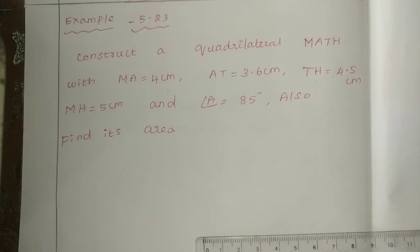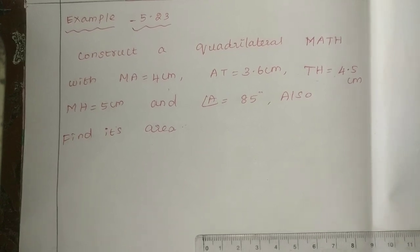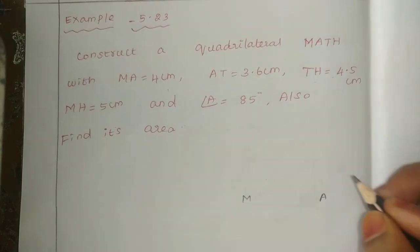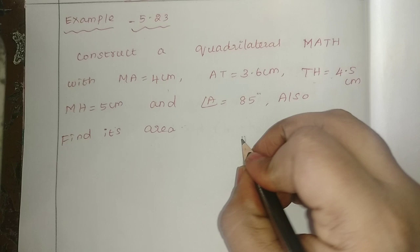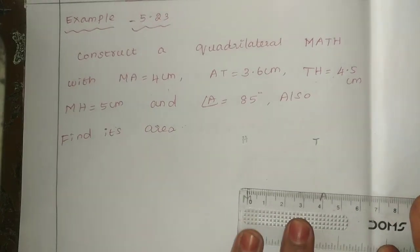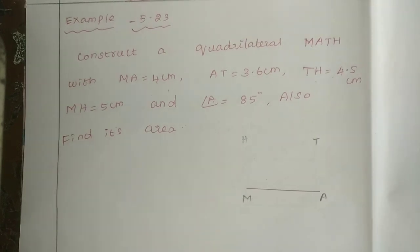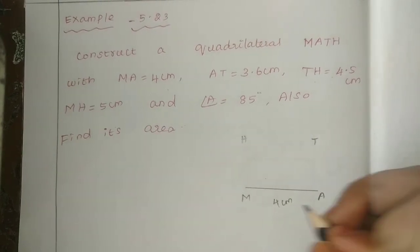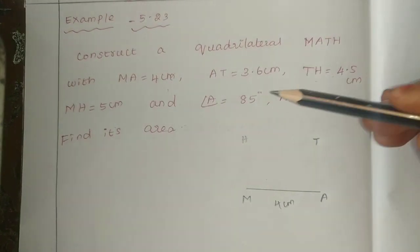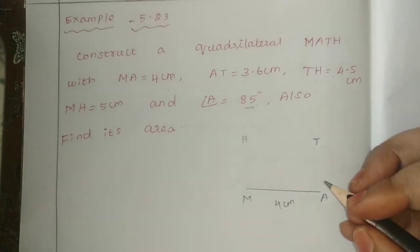All sums: first complete the rough diagram, then the fair diagram. The vertices are M, A, T, H. So the first base MA is 4 cm. In the rough diagram, we just show approximate lengths. MA is 4 cm. Next, angle A is 85 degrees.